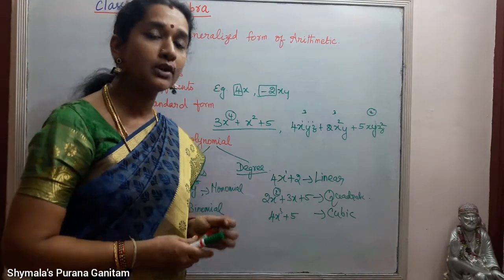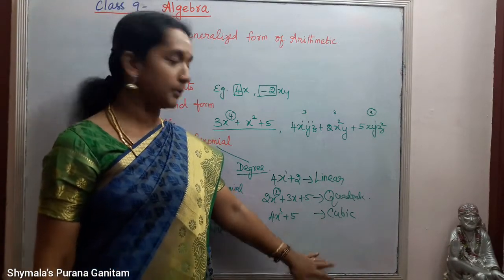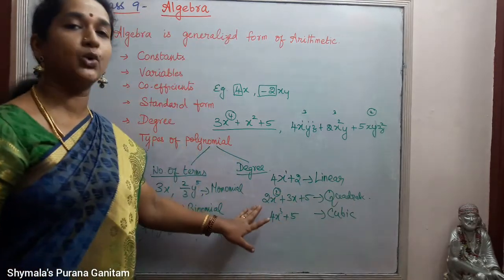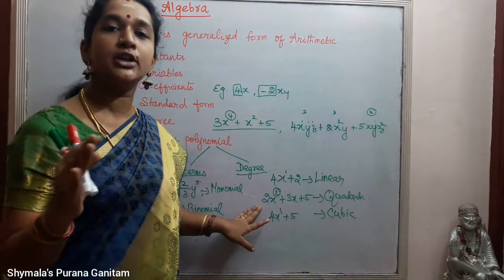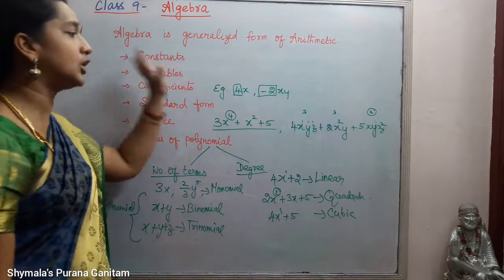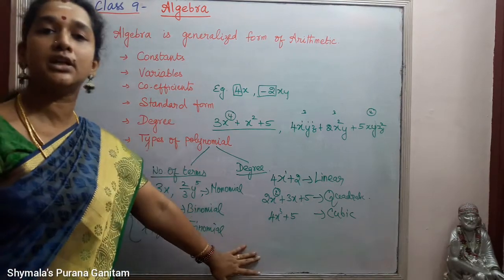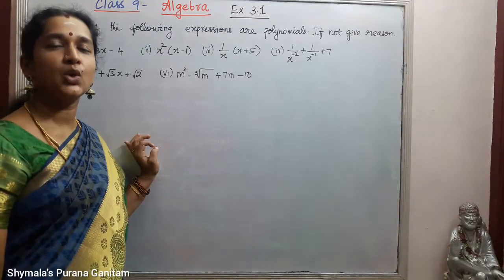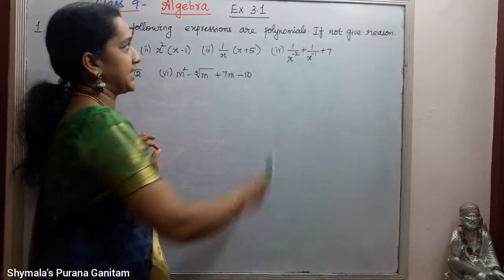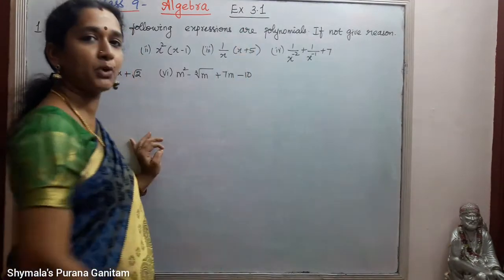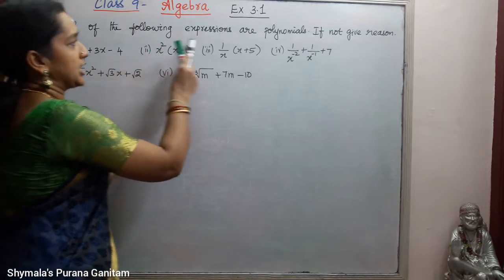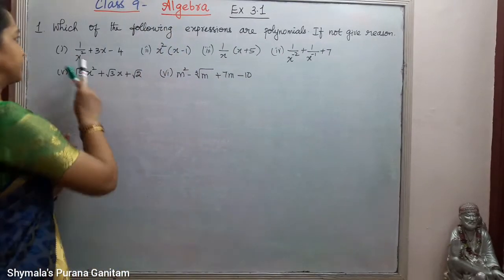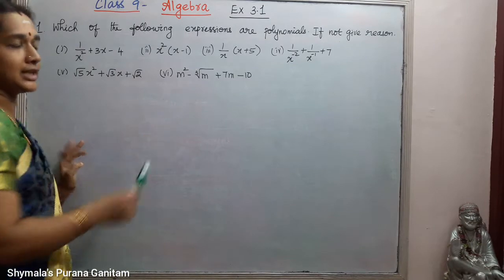But only these three polynomials — linear, quadratic, and cubic — are what we are going to learn in this chapter. These are all very important terms before going into the exercise. Now we will start with the first exercise, Exercise 3.1: 'Which of the following expressions are polynomials? If not, give reason.' Six sums are given.